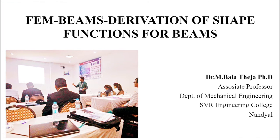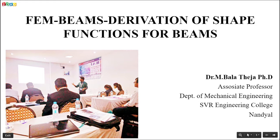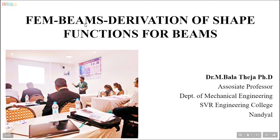A beam is a structural member having very long length compared to its other two lateral dimensions such as width and height. With respect to finite element analysis, a beam is considered as a one-dimensional horizontal structural member in which the loads are applied in the radial direction. Practically, beams are employed in buildings and bridges for supporting loads like roofs and roads acting on the top side. Mechanically, horizontal shafts act as rotating beams on which machine components like pulleys and flywheels are mounted, providing loads on the shafts.